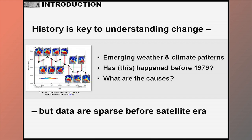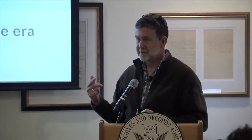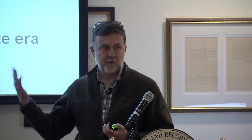History is the key to understanding change, but in the Arctic especially and around the world, the data are sparse before the satellite era. So we need to try and figure out what emerging weather and climate patterns mean in the longer-term context. Usually the first question that comes up when something happens - whether it's Hurricane Sandy or the polar vortex - is: has this happened before the satellite era? In the polar regions that means before 1979.